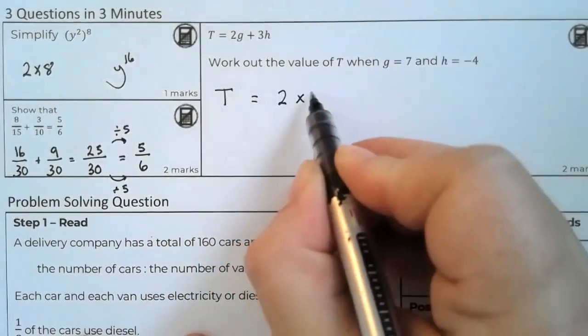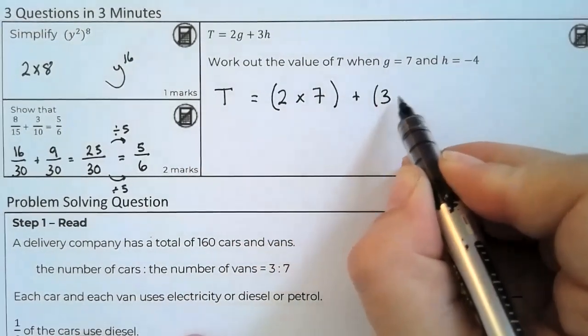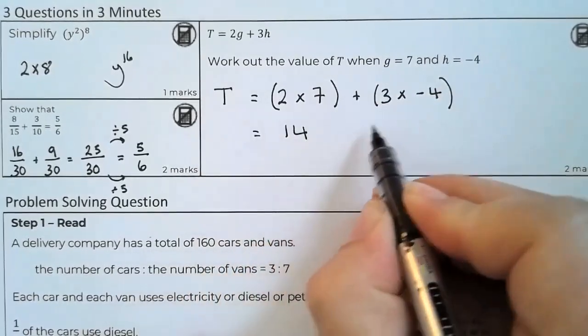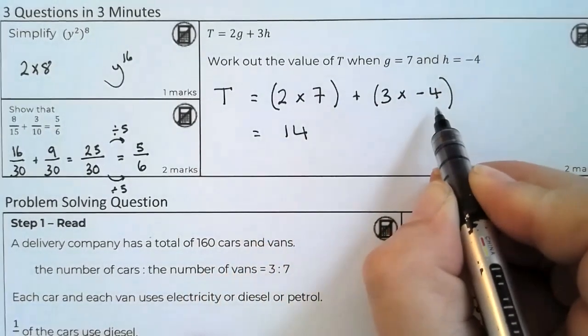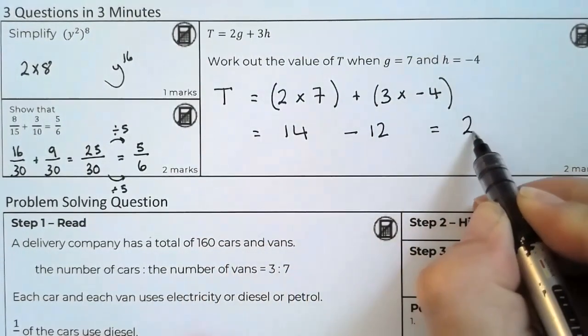We're looking at 2 multiplied by g, and 3 multiplied by negative 4. Now 3 multiplied by negative 4 is negative 12, and therefore t is 2.